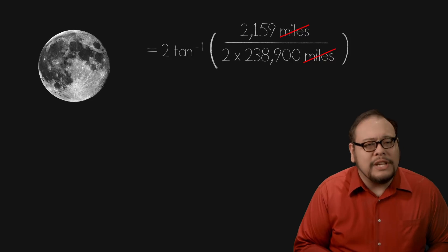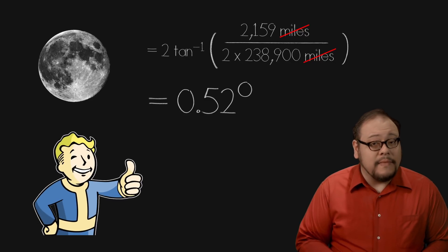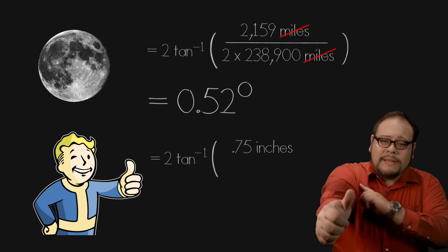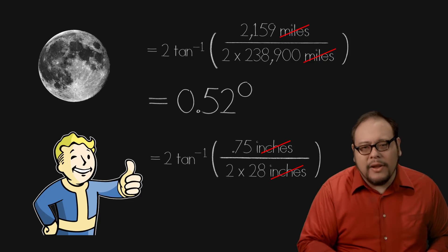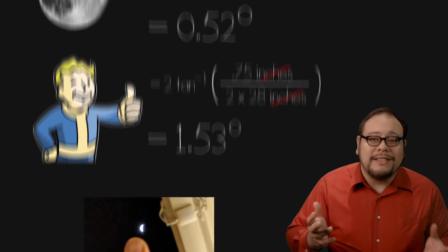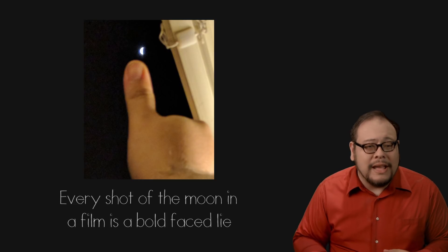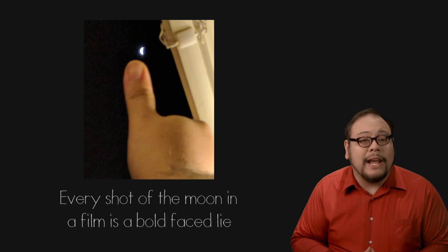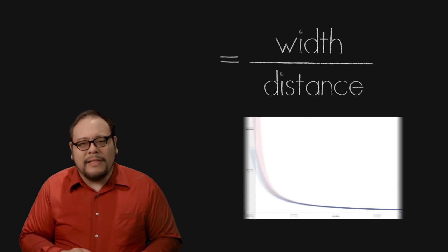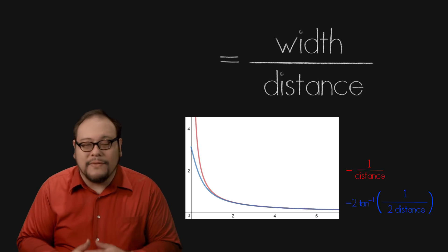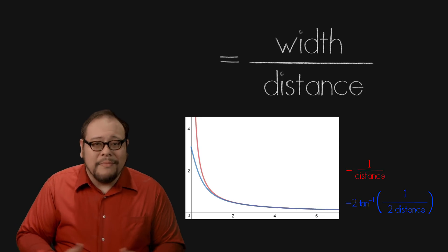We know the moon has a diameter of 2,159 miles and it's about 238,900 miles from the earth. Plug these values into our equation, convert from radians to degrees, and we get about half a degree. My thumb is about three quarters of an inch and my arm is about 28 inches long, so holding out my arm my thumb is about 1.5 degrees — almost 3 times wider than the moon. The angle of view equation can also be estimated with a much simpler function: width divided by distance. As you can see in this plot, the equations yield pretty much identical results for any distance greater than 2 times the width, which is true in almost all practical applications.